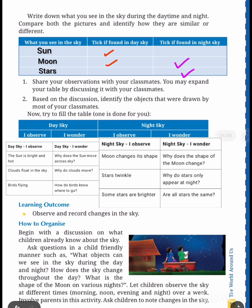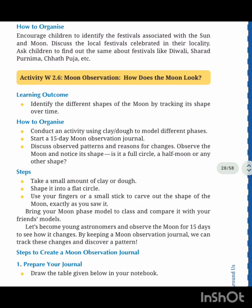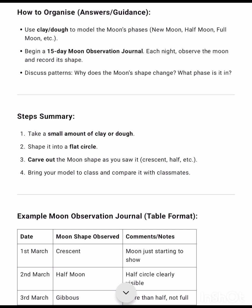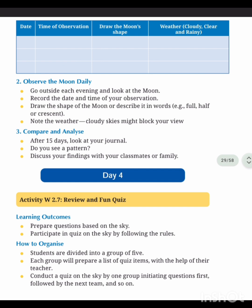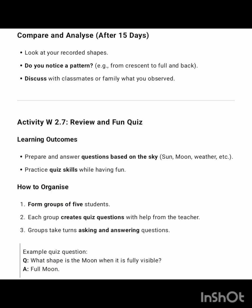Next, write down what you see in the sky during the daytime and the night time — compare the sky in the daytime and the night time. Data collection and analysis — how to organize: there is no activity in this stage. Next page is how to organize answer and guidance, summary, smooth observation and journal timetable. Day four answers: moon observation journal table for 15 days, daily instructions, and compare and analyze after 15 days.